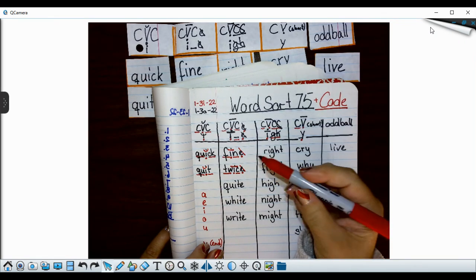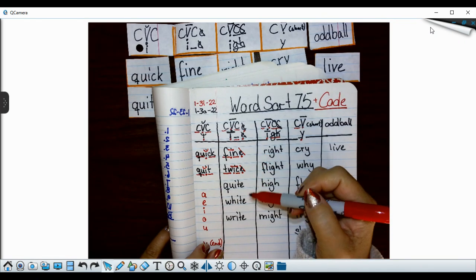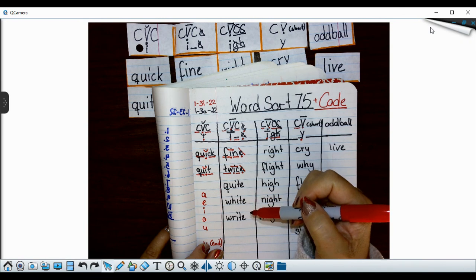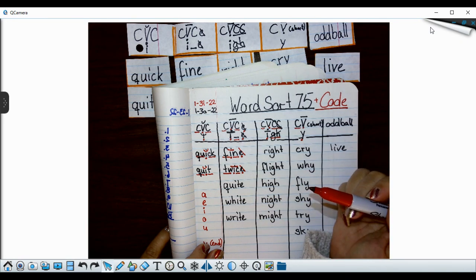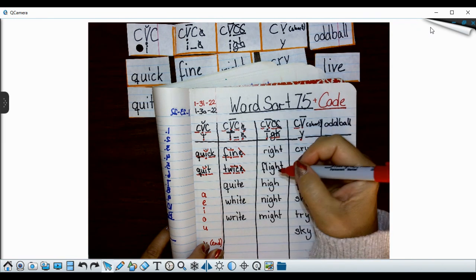All right I need you to code. Pause the video here and code the next three words. Now that you've coded them let's go to the next column.